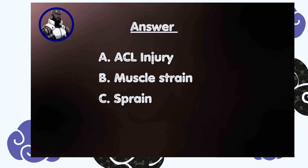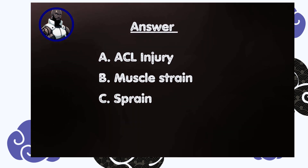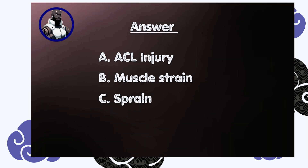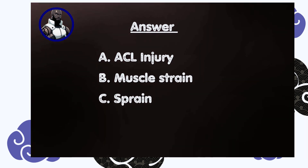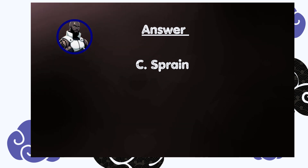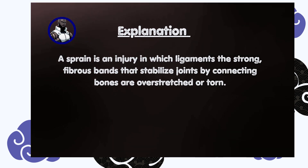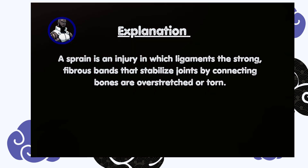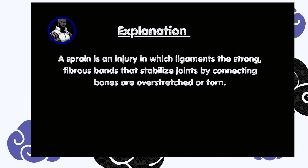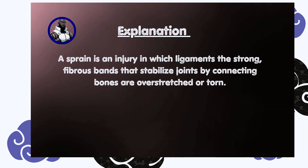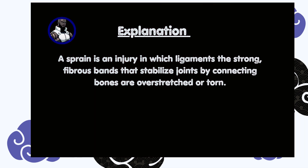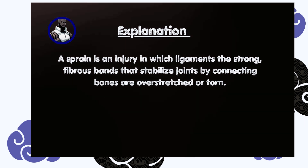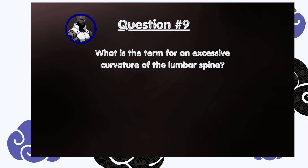Question number eight: an injury to a ligament is described as: A) ACL injury, B) Muscle strain, C) Sprain. Answer is C, sprain. A sprain is an injury in which ligaments — the strong fibrous bands that stabilize joints by connecting bones — are overstretched or torn.